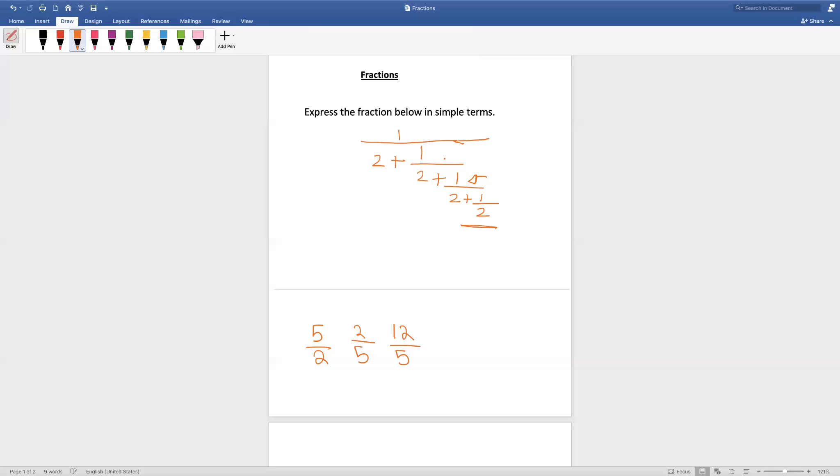And now we have to take the reciprocal again. 5 by 12. And then we have to add 2. So 5 by 12 plus 2 is equal to 29 by 12.